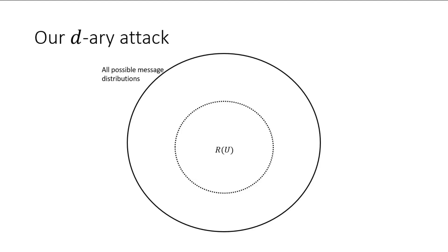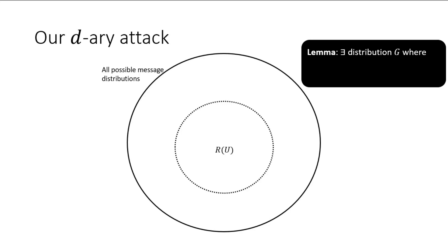So how does our attack work? We proved the following lemma. There is a special distribution g that is far from being the uniform distribution, but the message distributions R of g and R of u are close. They are epsilon over root d close together. After finding this g, the adversary adapts the attack from the binary case.